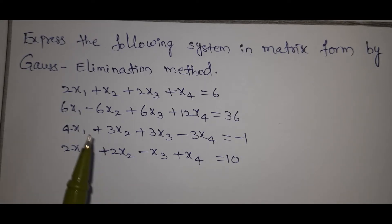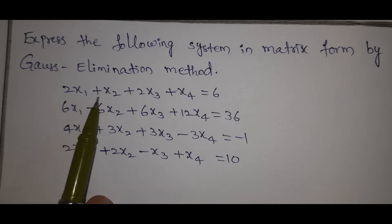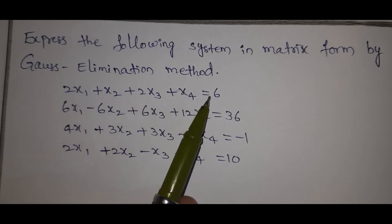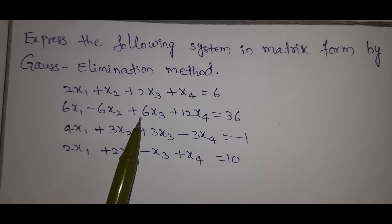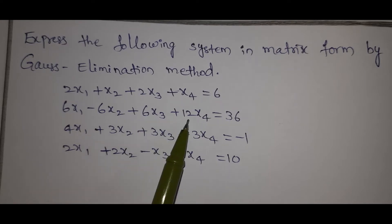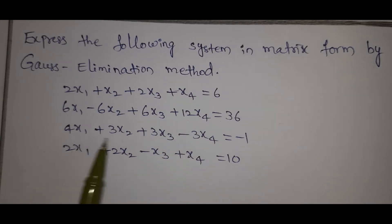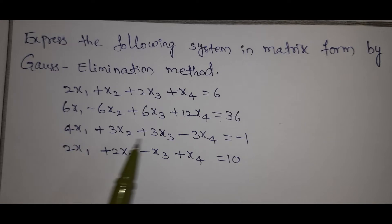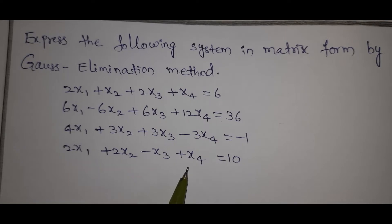We have 4 equations here: 2x1 + x2 + 2x3 + x4 = 6; 6x1 - 6x2 + 6x3 + 2x4 = 36; 4x1 + 3x2 + 3x3 - 3x4 = -1; 2x1 + 2x2 - x3 + x4 = 10.